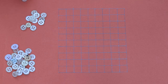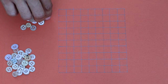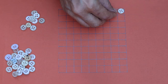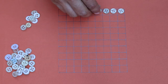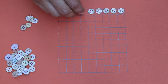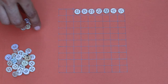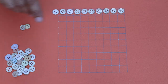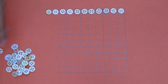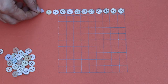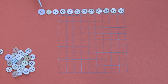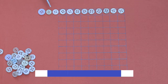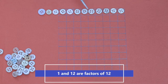Let us see what different rectangles I can make with these twelve buttons. First of all, I'll arrange all the buttons in one single row — that will be a rectangle. One, two, three, four, five, six, seven, eight, nine, ten, eleven, twelve. So this rectangle is one row of twelve buttons: one multiplied by twelve.